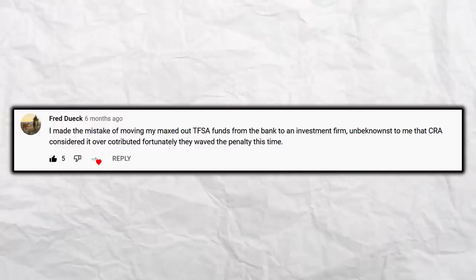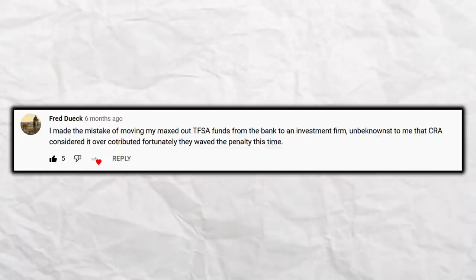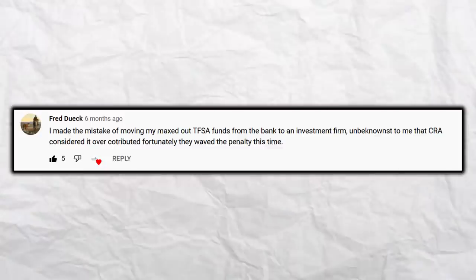The last question comes from Fred Duick: he made the mistake of moving his maxed-out TFSA funds from the bank to an investment firm, and unbeknownst to him, CRA considered it over-contributed. Fortunately, they waived the penalty. What happened is he cashed out the TFSA at the bank and re-invested it at the new firm — you cannot do that. If you're maxed out and pull the money out, you can't put it back until the following calendar year. He would absolutely be over-contributing because he had no contribution room left. His investment firm should have been aware and not allowed it. What you need to do is use a T2033, which is a registered transfer form, to transfer the account without actually selling and buying back in.